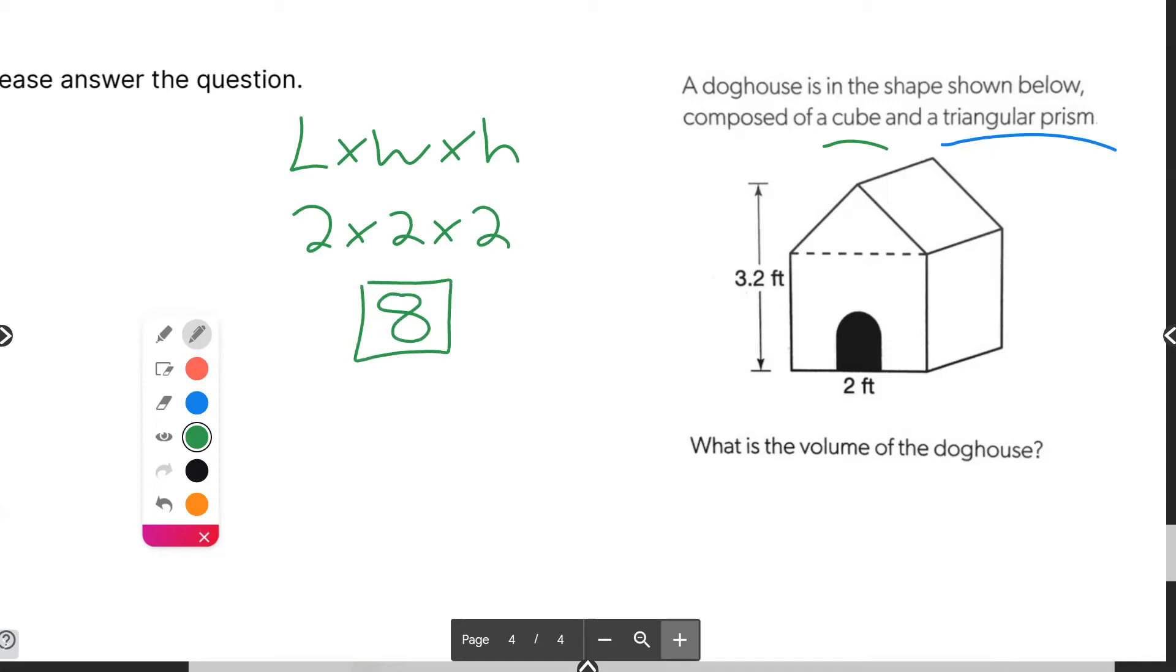And then 2 times 2 times 2 is going to make 8, not 6. Some of you put down 6. That is not correct. 2 times 2 times 2 makes 8. So this is the volume of this guy right there.